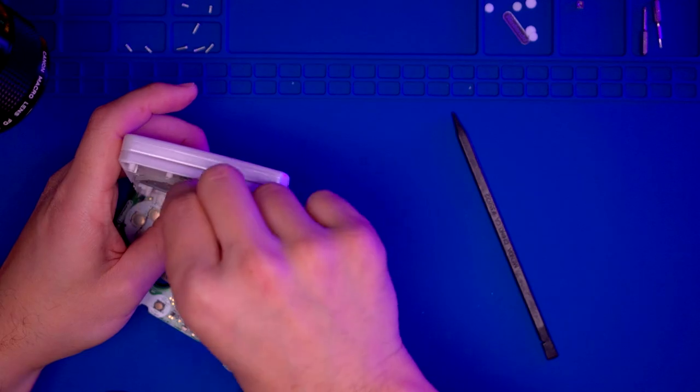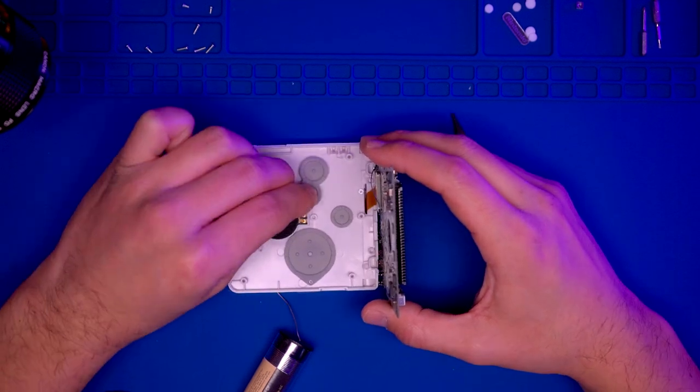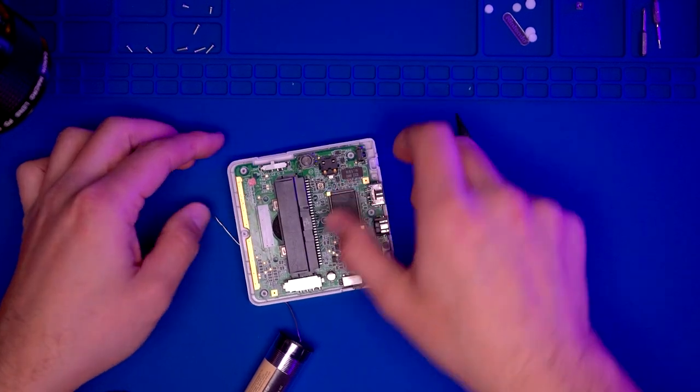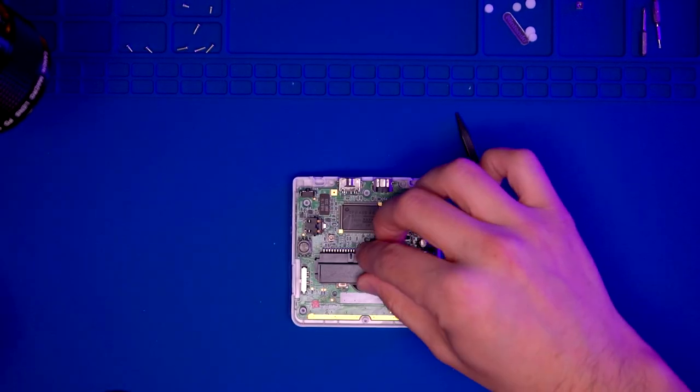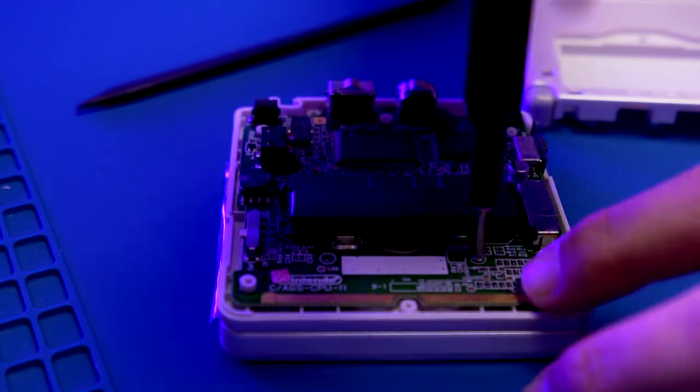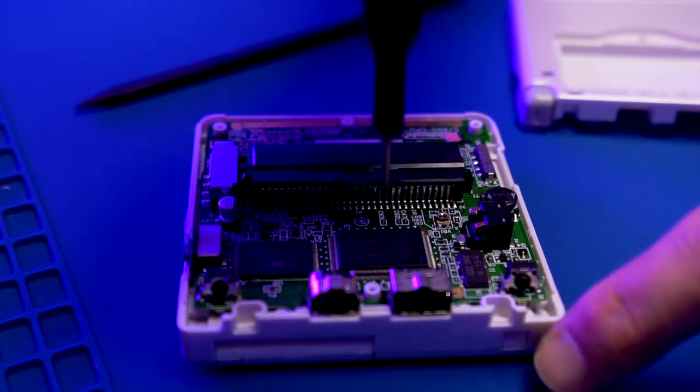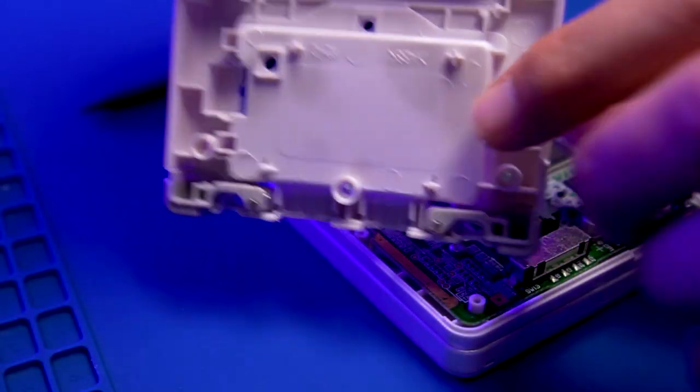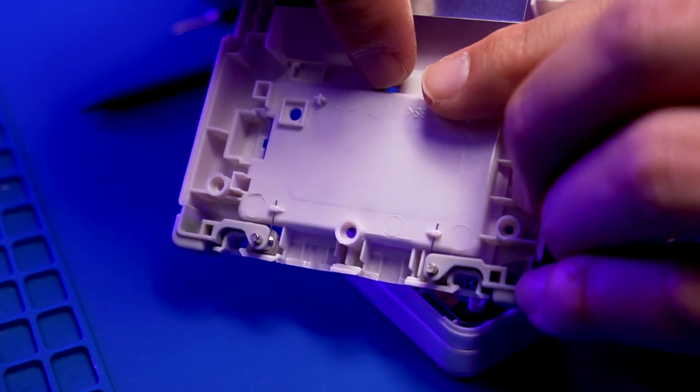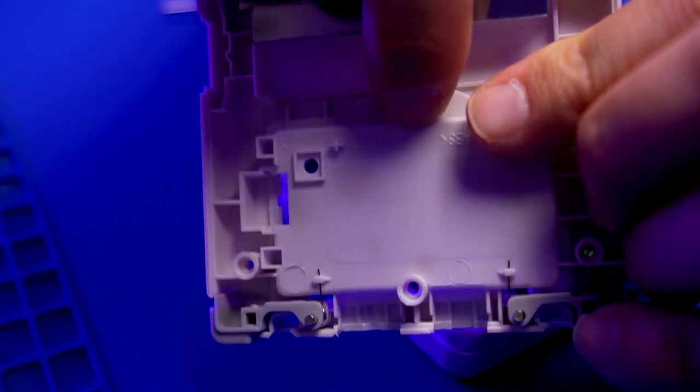Go ahead and lock the ribbon cable in place. Make sure all your buttons and membranes are in the Game Boy Advance shell housing before we install the PCB and the speaker. Now we're going to attach the PCB to the shell using the three Phillips screws.